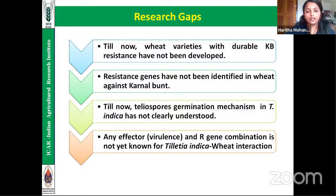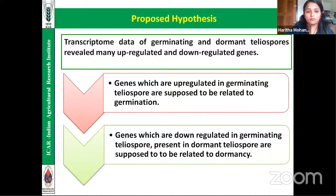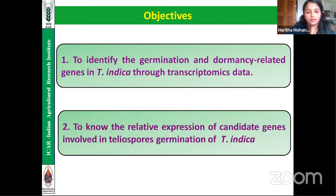Research gaps include the lack of durable Karnal bunt resistant wheat varieties, unidentified resistance genes, and the teliospore germination mechanism of Tilletia indica not being clearly understood. No effector-resistance gene combination has been identified for the Tilletia indica–wheat interaction. The hypothesis proposed is that transcriptome data of germinating versus dormant teliospores reveals upregulated genes related to germination and downregulated genes related to dormancy. The two objectives are: identification of germination and dormancy-related genes through transcriptomics, and validation of candidate genes by relative expression analysis.